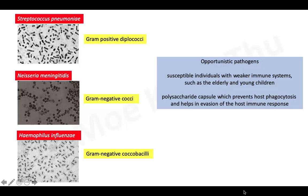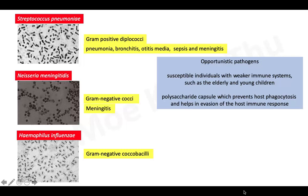For example, Streptococcus pneumoniae can cause pneumonia, bronchitis, otitis, empyema, sepsis, and meningitis. Neisseria meningitidis can cause meningitis.